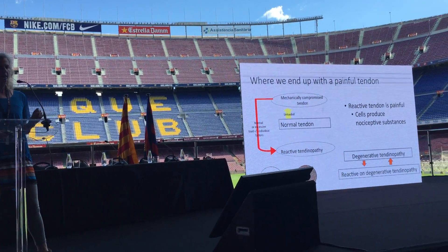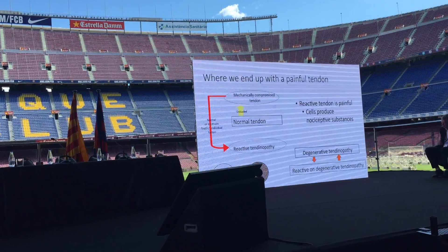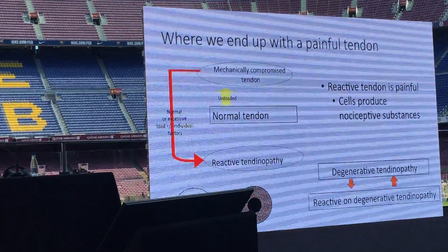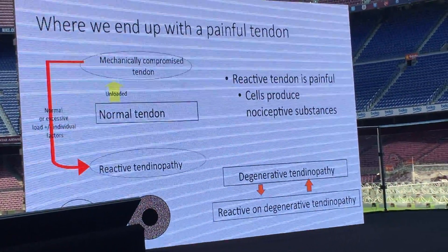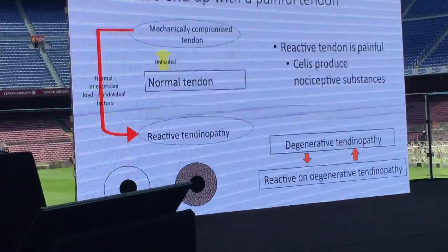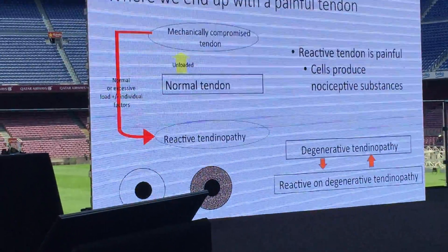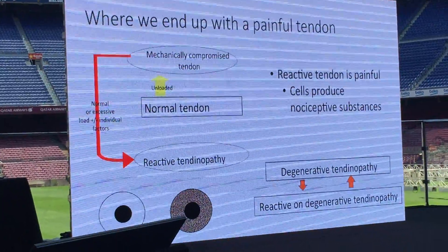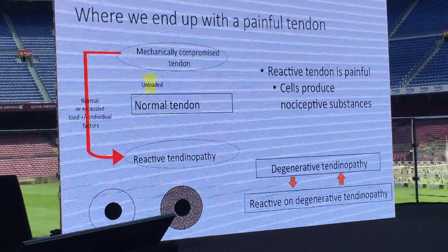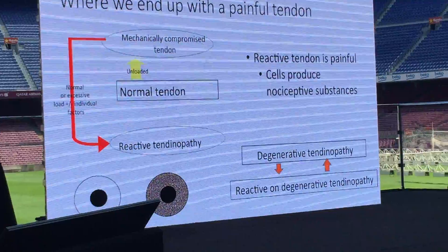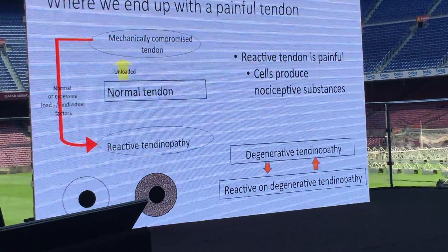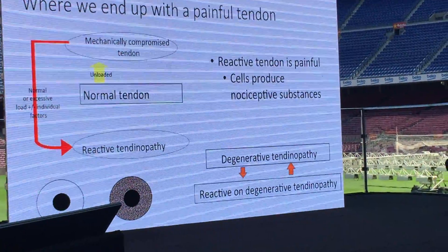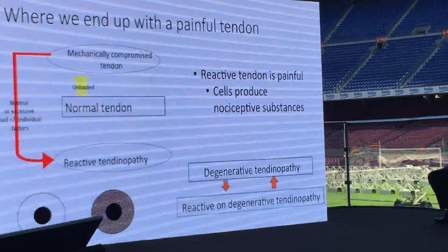We also see this other scenario of reactivity on the background of an abnormal tendon. If you have a look at the circles down the bottom on the left, we have a tendon with an area of degeneration in it, and as we talked about, that might be mechanically silent. So if we overload this tendon, the only tissue that we can actually overload is the normal part of the tendon, and this is where we get a reactive tendinopathy in the normal part of the tendon, commonly called reactive on degenerative tendon. This is really quite common in our senior athletes.